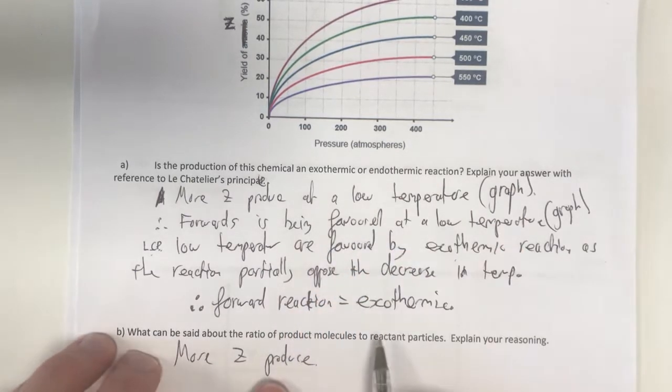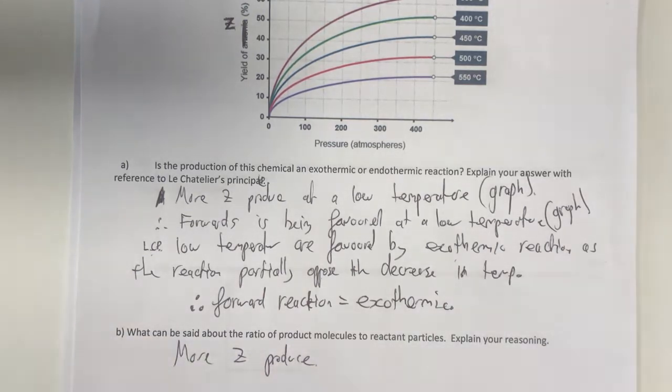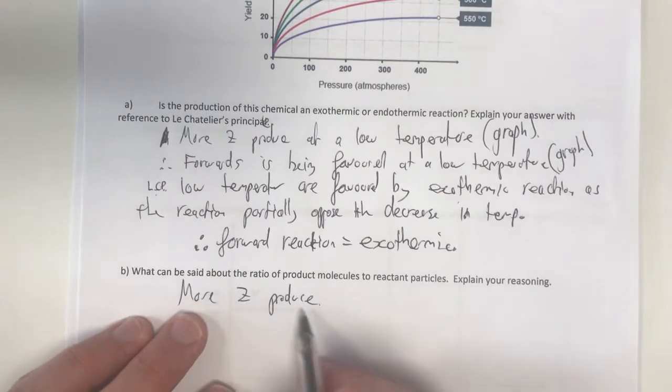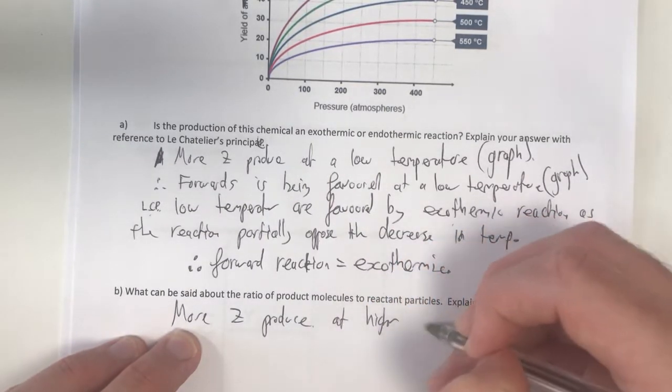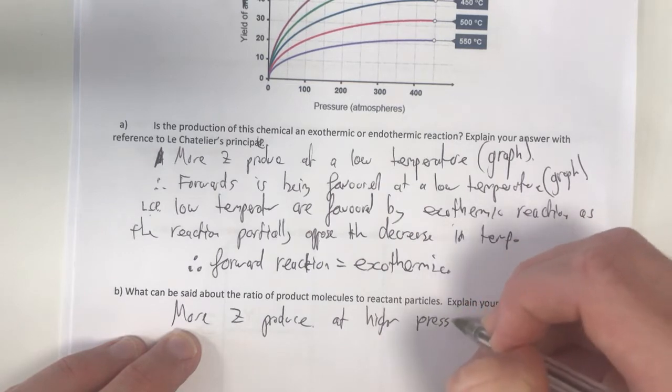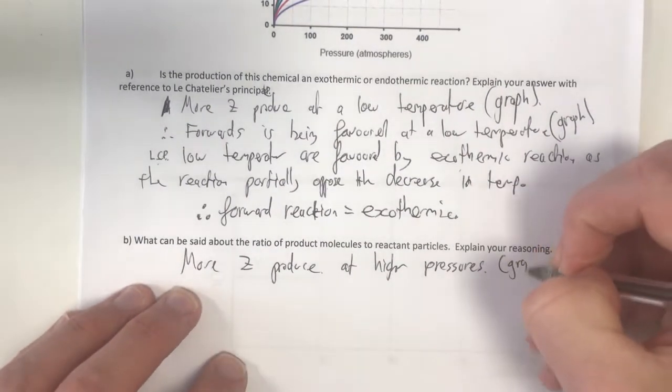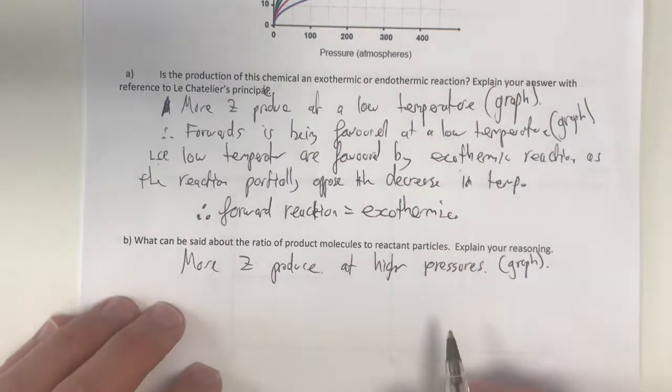The ratio of reactant to product molecules, that is all about a decrease in pressure or a change in pressure favouring a side. So therefore, more Z is produced at higher pressures. That's from our graph.